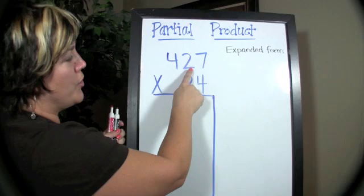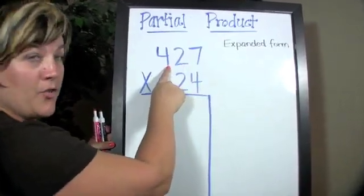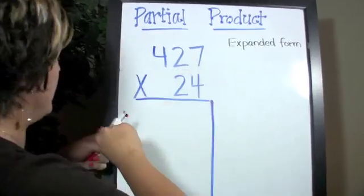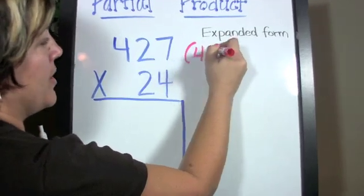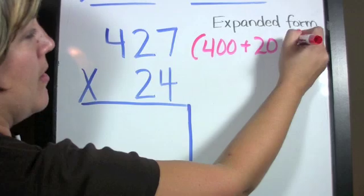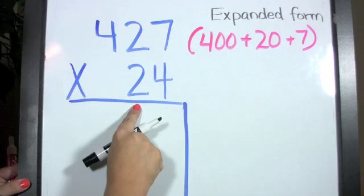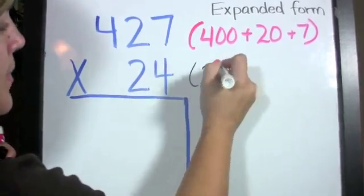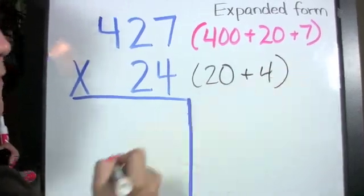We're going to start by looking at 427, and remember this is 400, 20, and 7 ones. So we can write it like this: 400 plus 20 plus 7. For 24, we can say that's 2 tens and write 20 plus 4 ones and write a 4.